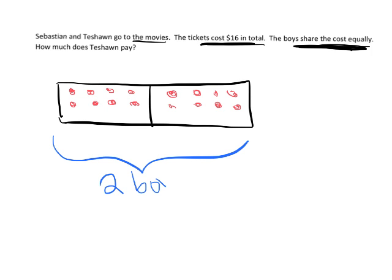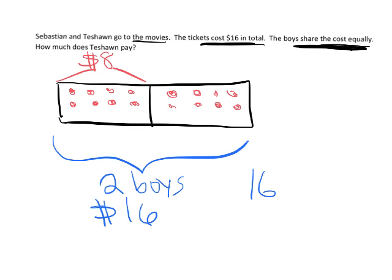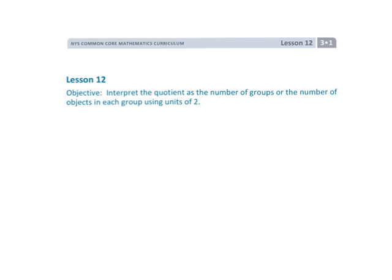We can see that each boy pays $8. So the division equation is 16 divided by 2 equals 8, where 2 represents the number of groups. And that's Lesson 12 — dividing by 2 using tape diagrams and arrays.